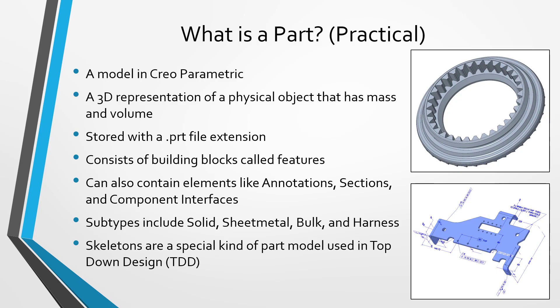The other type of part is a harness part, which is used in cabling. There is another special kind of part model called a skeleton, and that's used in top-down design. Skeletons will contain geometry that's going to be used or referenced by multiple components — for example, it could contain what's called the outer mold line, or OML, in some industries.